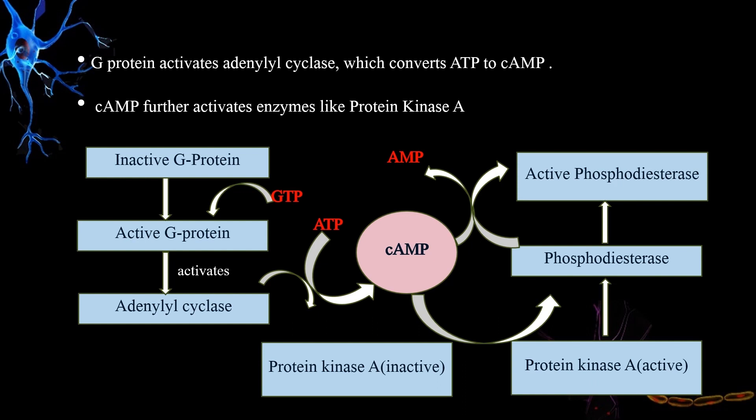So what does cAMP do? cAMP further activates protein kinase A. Protein kinase A is already in an inactive state, so whenever cAMP is produced, cAMP activates protein kinase A. The activated protein kinase A further targets other protein molecules — for example, phosphodiesterase. The inactive phosphodiesterase becomes active with the help of protein kinase A.